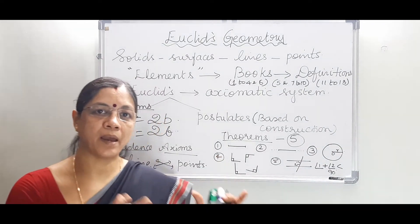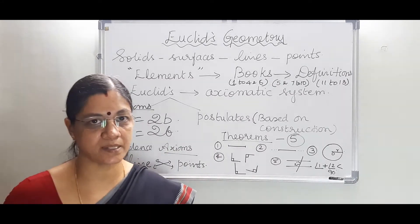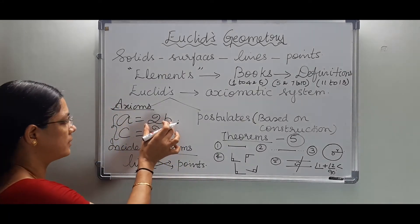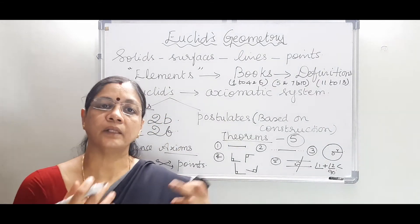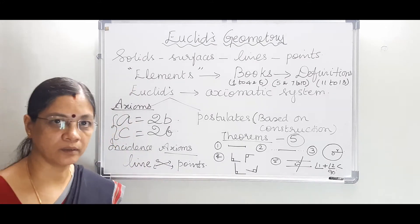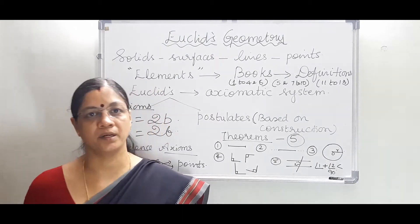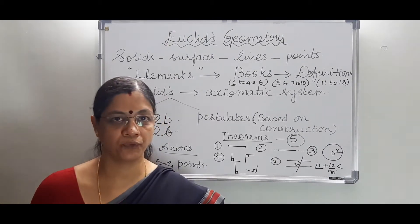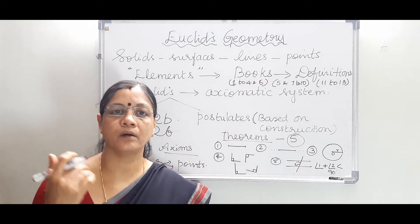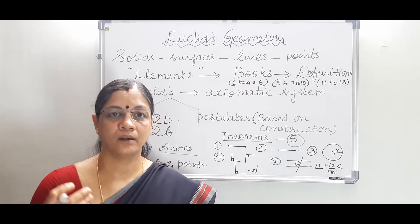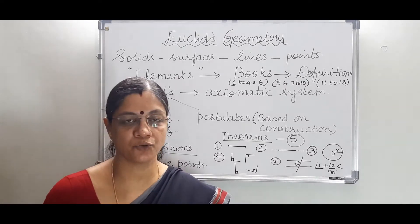Likewise, the same axiom applies when things are equal to half of the same thing. That is, if it is b/2 instead of 2b, then the things are equal to one another. So those are axioms — basic facts which do not need further proof. They were accepted as they were, and Euclid did not need much reasoning to prove them.